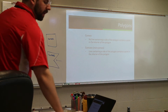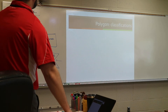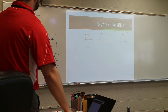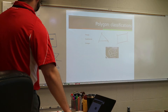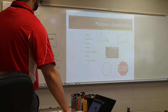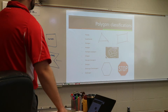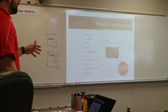We talked about the different names of polygons yesterday. We talked about triangles, quads, pentagons. Hexagons are six, heptagons are seven, octagons are eight — that's the stop sign. Nonagons are nine. We talked about decagons, undecagons, and dodecagons. Those are all the different names.